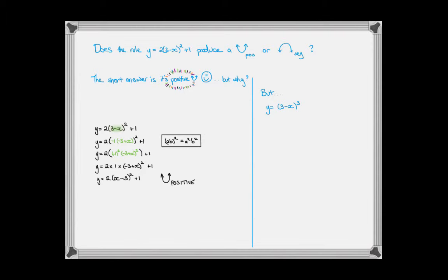Check out this example here of a cubic where I've got 3 minus x all to the power of 3. Does this create a positive cubic or a negative cubic? Well, let's apply the same method that we just did over here on the left-hand side to this problem here on the right-hand side. What really bothers us here is this minus x.